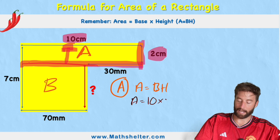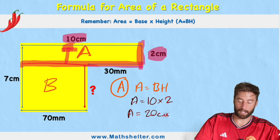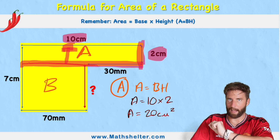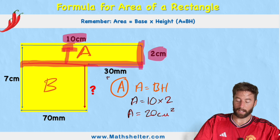So 10 times 2 — therefore area equals 20 centimeters squared. Don't forget that part. So that's shape A.